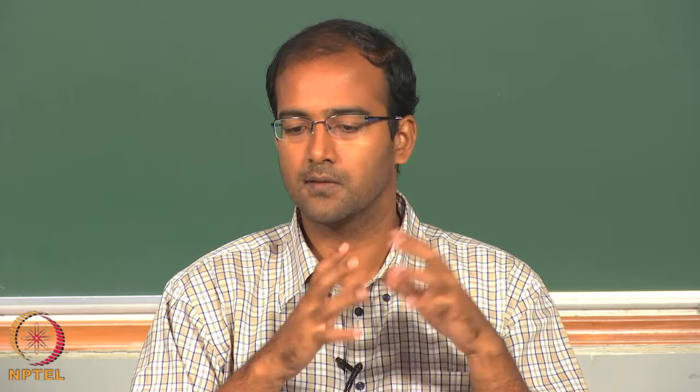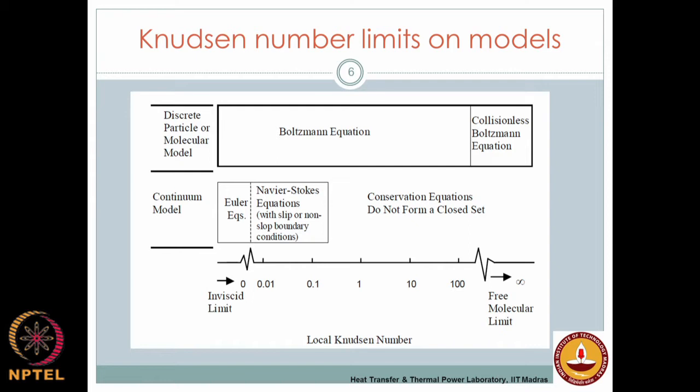The Boltzmann equation can be used for all Knudsen number ranges; however, the computational effort required is tremendously larger than Navier-Stokes. Approaching the continuum limit at small Knudsen number, it becomes very inefficient to solve the Boltzmann equation, so we revert to Navier-Stokes. For larger Knudsen numbers, we must go away from Navier-Stokes and use the Boltzmann transport equation. People also talk about molecular dynamics — there is a catch in using Boltzmann transport: you need to know the mean free path of the energy carriers.